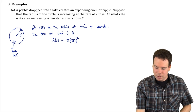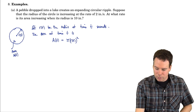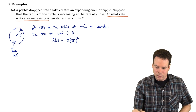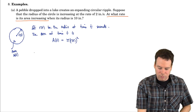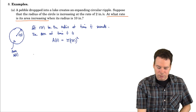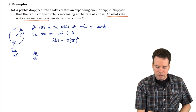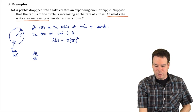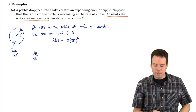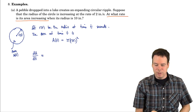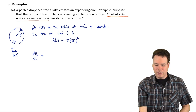Now we're interested in: at what rate is its area increasing? That's a question about a derivative. So we want to know what dA/dt is, and we'd like to know it in the particular case when the radius is 10. Let's work out what the derivative is in general and see if we can figure out what it is when the radius is 10.